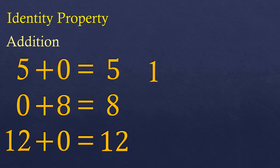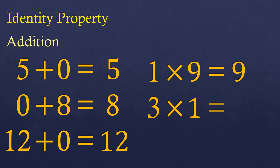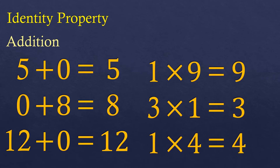Now, 1 times 9 is 9, and 3 times 1 is 3, and 1 times 4 is 4. So any number multiplied by 1 is just itself. Is that true for any number? Yes, obviously any number times 1 is just itself — that is the identity property of multiplication.